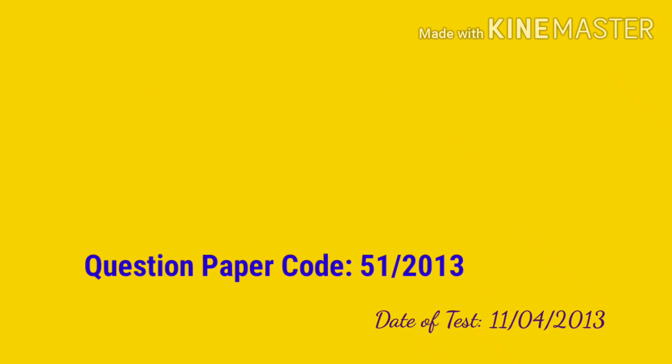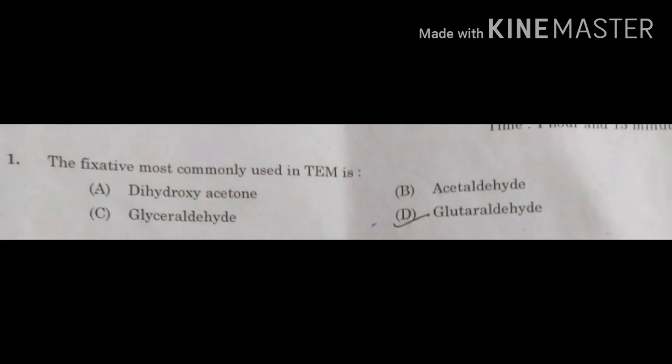Let us start. The first question asks about the fixative most commonly used in TEM. TEM — Transmission Electron Microscopy — is widely used to study the internal structure of the cell, especially the cell organelles. SEM — Scanning Electron Microscopy — is used to study the external structure of the cell. In TEM, the fixative used is an aldehyde derivative.